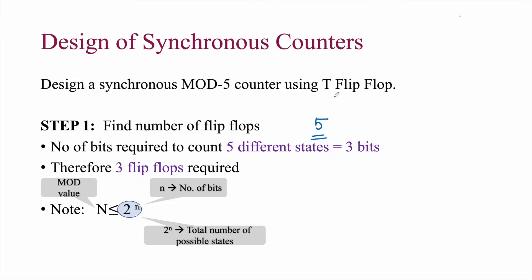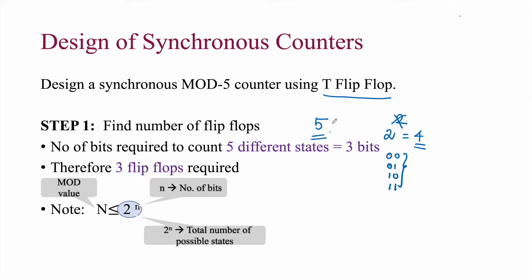Now we have to find out how many T flip-flops are required. Let us assume we are starting with 2. If it is 2, then 2 to the power 2 equals 4, so only 4 states are achievable: 00, 01, 10, and 11. But we want 5 states, therefore 2 flip-flops are not enough to achieve this mod-5 counter.